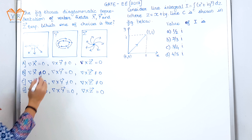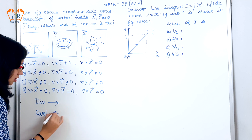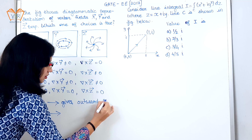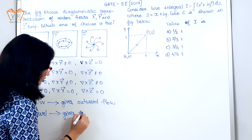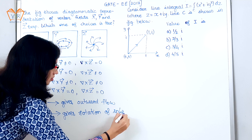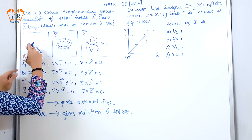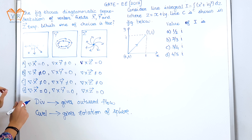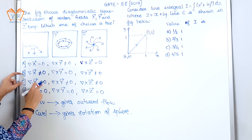If you see the first figure, we know that divergence gives outward flow and curl gives rotation of a sphere. If you see the first figure, all the arrows are shown in the outward direction. So we can say that divergence in this case is not equal to zero. Looking at the second and third options, divergence is not equal to zero.